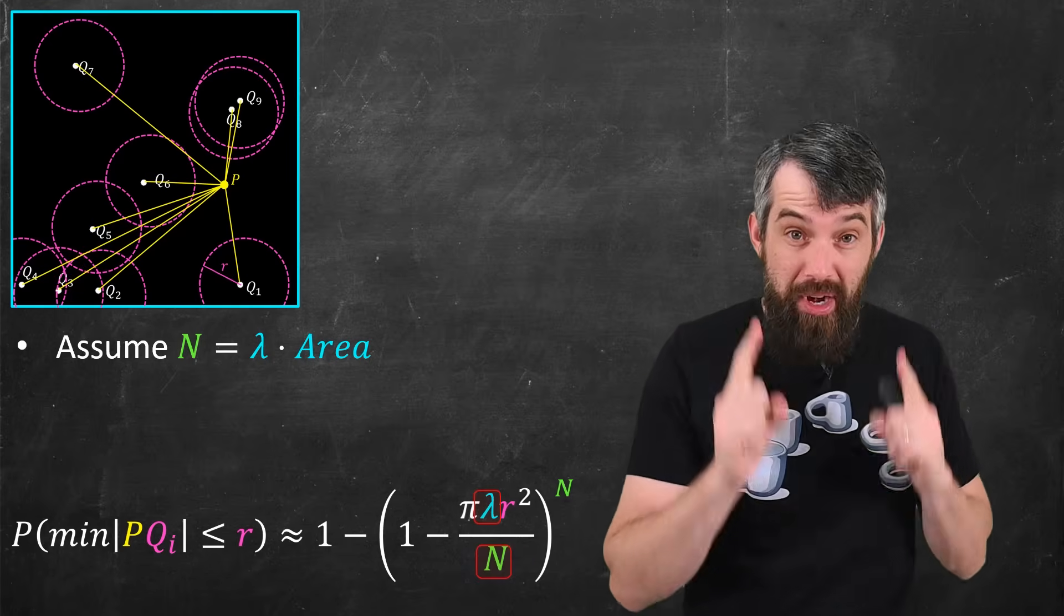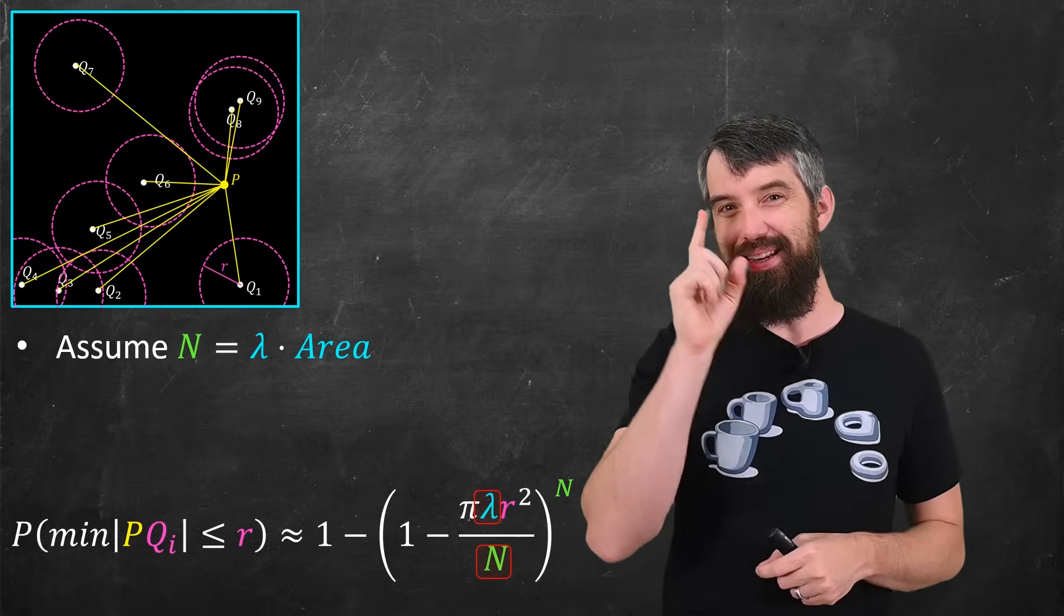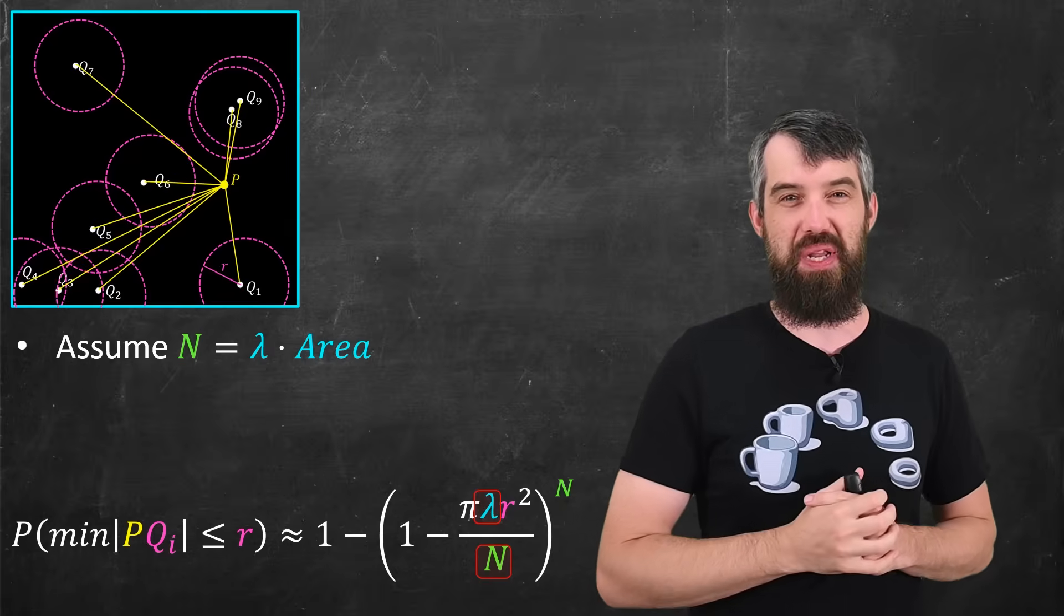So I'm going to plug that in, I'm going to get rid of the area, and I'm going to have lambda divided by n in its place. And now let's use the fact that we're taking a large sample where n is very large.